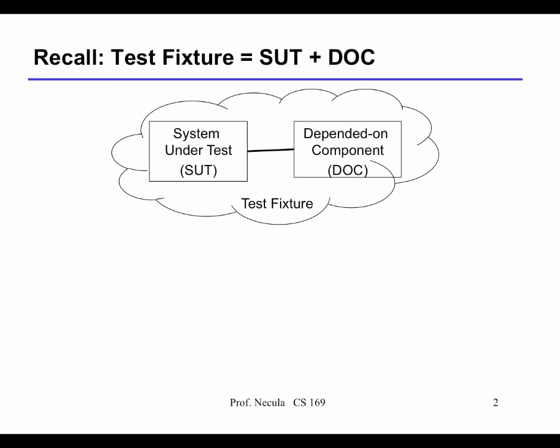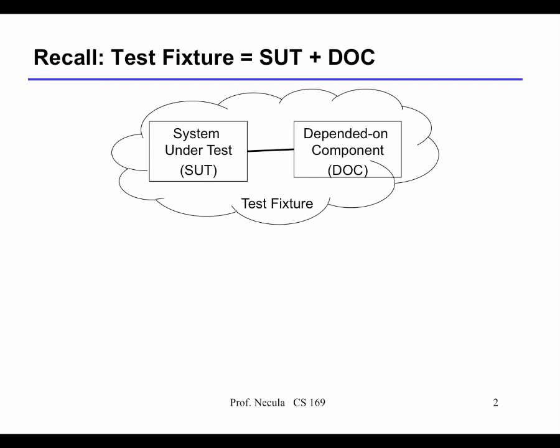Terminology: we have the system under test, and everything else in terms of code that it needs to run so that we can test it. If the system under test is a simple method, you may need a constructor to construct the object before you can invoke the method, or your system under test might invoke some other helper methods — those become the dependent-on components. The bigger this unit that you're testing, probably the more things it depends on, and we have discussed that this is actually a problem.